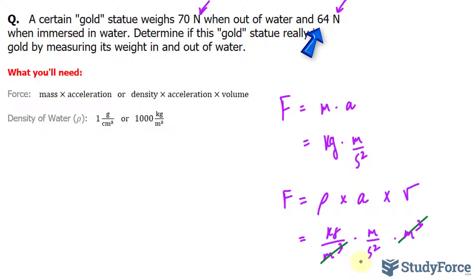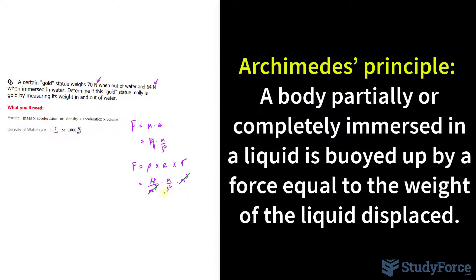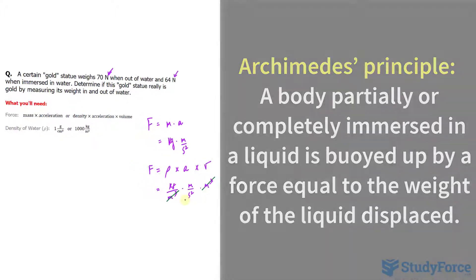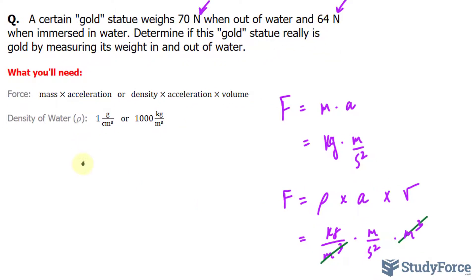The weight of the object is less in the water — 64 compared to 70 newtons. Material objects weigh less when partially or completely submerged in liquids due to a buoyant force of the liquid pushing back against the object. This buoyant force is expressed by Archimedes' principle, which states that a body partially or completely immersed in a liquid is buoyed up by a force equal to the weight of the liquid displaced. The weight goes from 70 to 64, so there is a loss of 6 newtons.